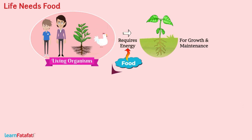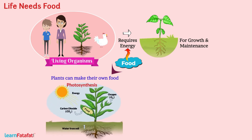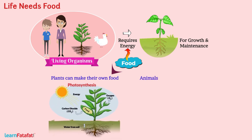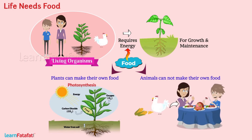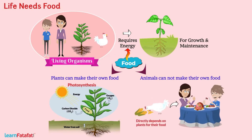You must be knowing that plants can make their own food by the process of photosynthesis. But animals, on the other hand, cannot make their own food. Instead, all animals depend directly or indirectly on plants for their food.